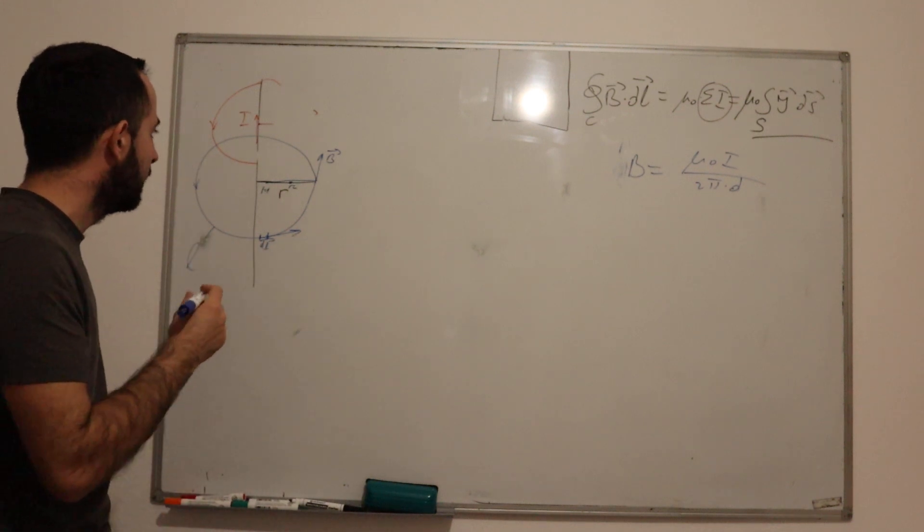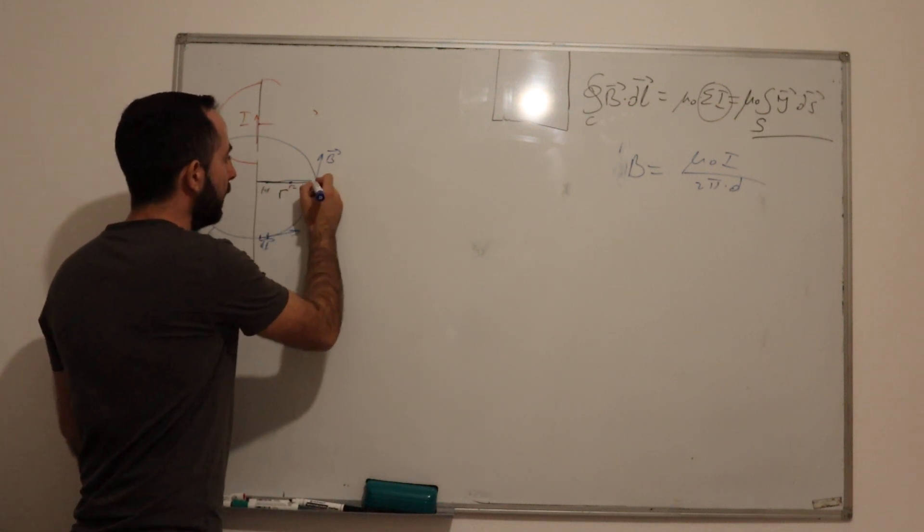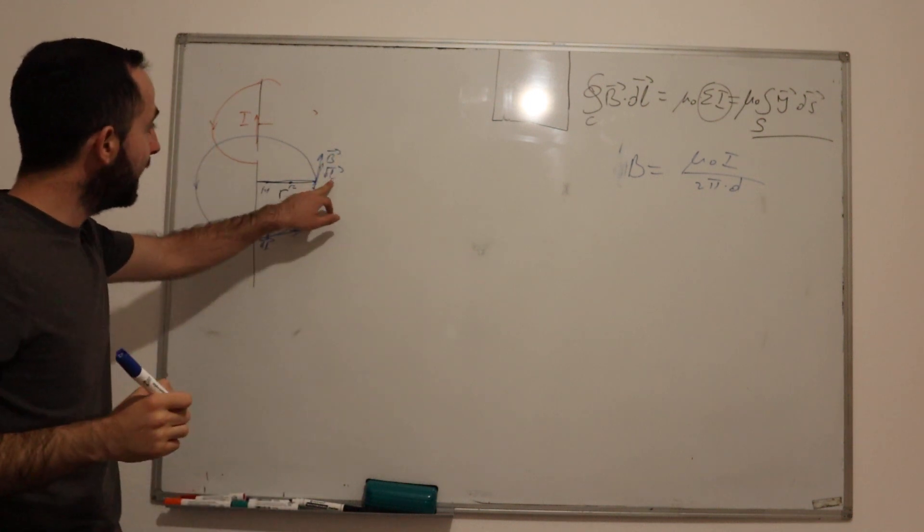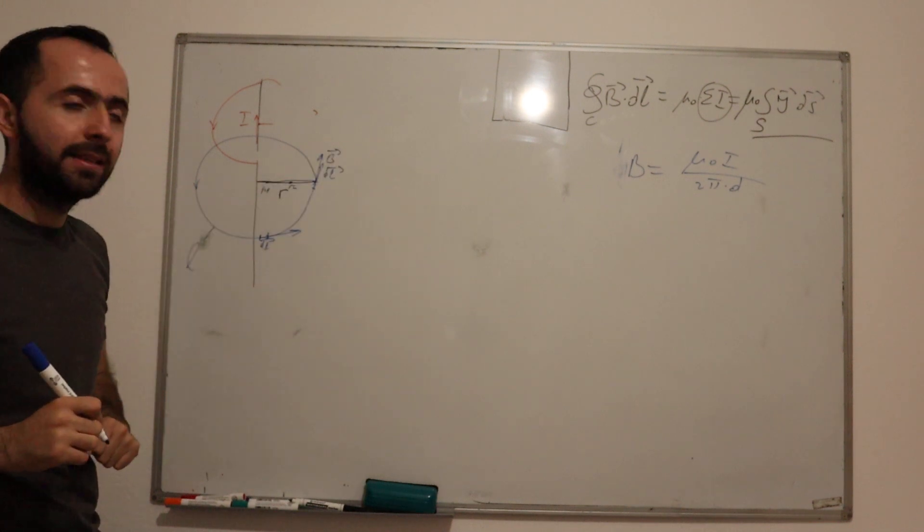which means that here at this point, the direction of dL has the same angle as B.